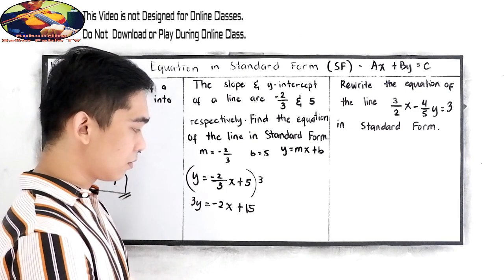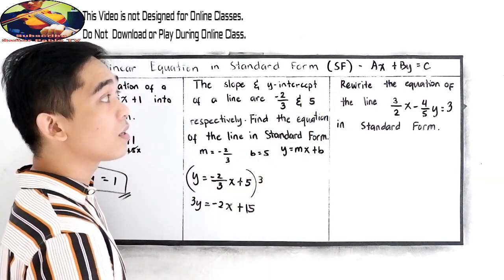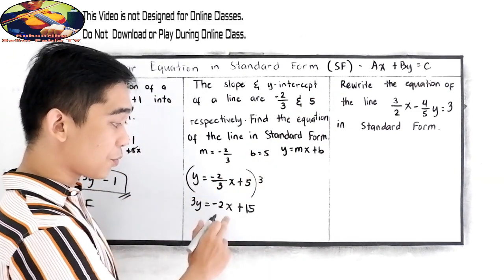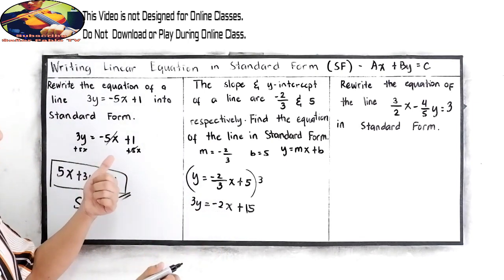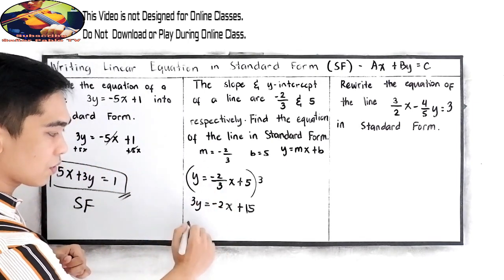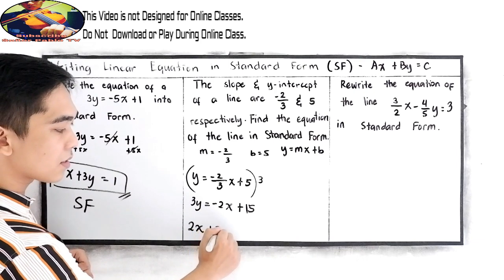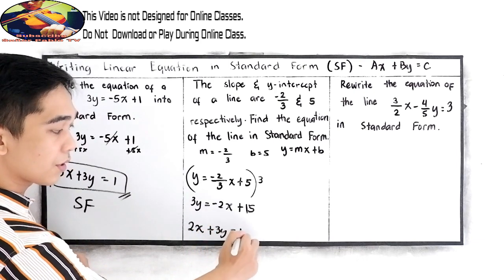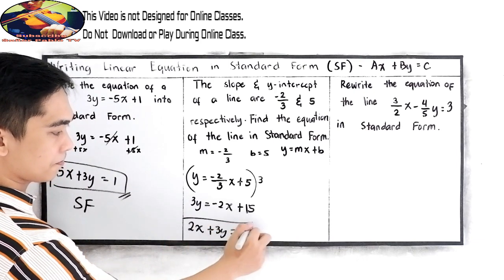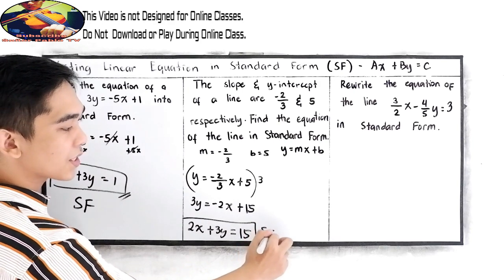Now write it into standard form. Using addition property of equality, just like in number 1, this becomes 2x + 3y = 15. This is our standard form.